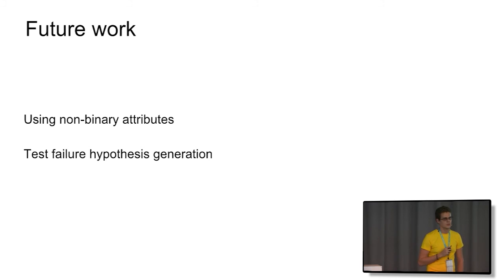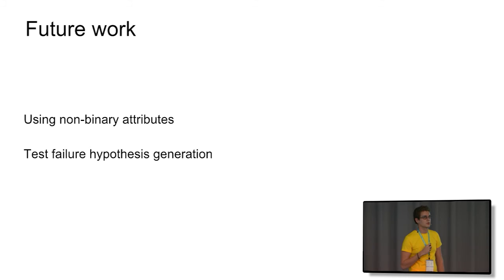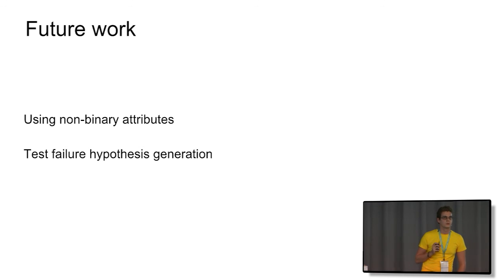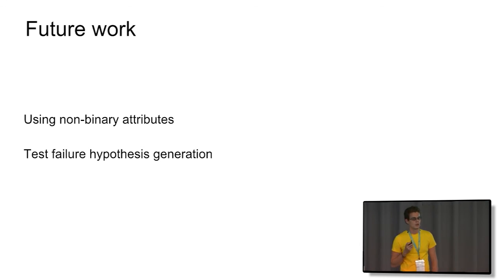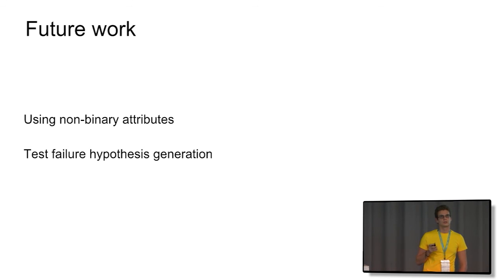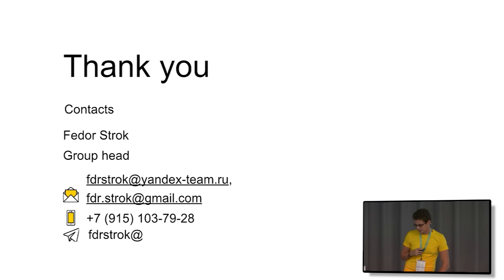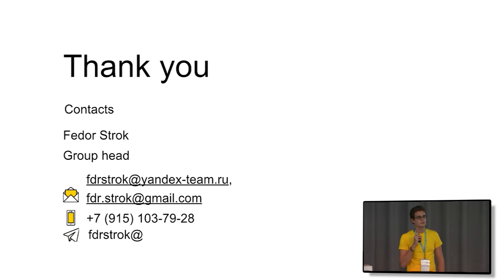About future work: this framework is quite useful but has some limitations. For example, we do not currently use non-binary attributes, but it is doable — it is called pattern structures and is part of future work. Another direction is using machine learning based on formal concept analysis to find hypotheses for why some tests failed, and the iceberg picture is a good way to approach this. Thank you — I hope this talk was a bit inspiring. You can find me during the break or use the online contacts.